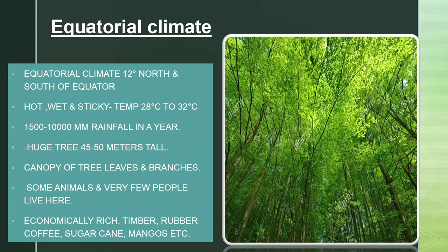Equatorial climate: 12 degrees north and south of the equator. Hot, wet and sticky. Temperature ranges from 28 degrees Celsius to 32 degrees Celsius. Rainfall of 1,500 to 10,000 mm per year, which is very high. Huge trees 45 to 50 meters tall, with a canopy of tree leaves and branches. Some animals and very few people live here.